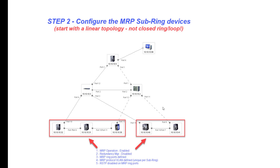The next thing we're going to do is go into the MRP subring switches. For all of these switches, we're going to enable the MRP operation, make sure that the redundancy manager is disabled, define our ring ports, and also define a unique VLAN ID for the MRP protocol. This is not for the data traversing the network — it is just for the MRP watchdog packets that get sent out to verify and test the integrity of those rings.